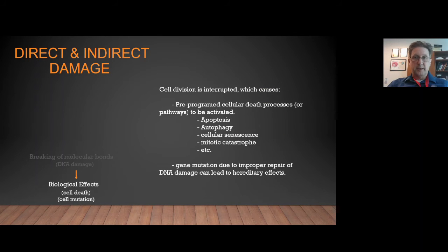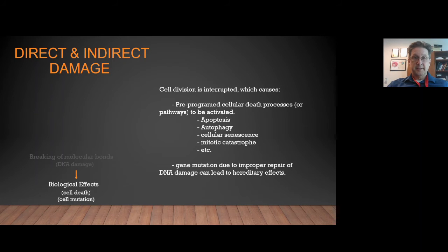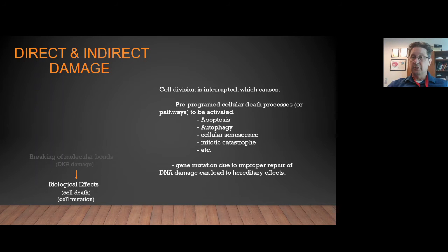If the cell cannot repair that damage, it causes an interruption in cell division — the cell can no longer divide successfully because the genetic material is damaged. This causes the cell to enter an automatic pre-programmed cell death cycle, which can be through apoptosis, autophagy, cell senescence, or mitotic catastrophe. If the damage can be repaired but is incorrectly repaired by the cell, this results in a gene mutation. If the cell is actually able to divide after this mutation occurs, it could lead to hereditary effects within the organism in the years to come.